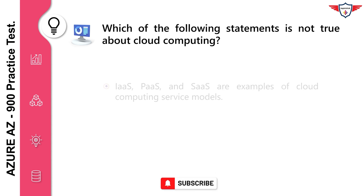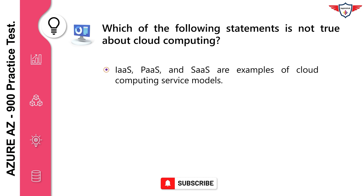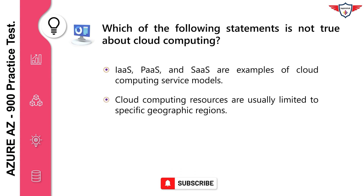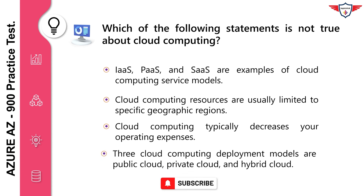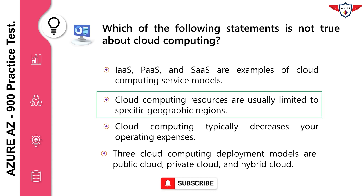Which of the following statements is not true about cloud computing? IaaS, PaaS, and SaaS are examples of cloud computing service models. Cloud computing resources are usually limited to specific geographic regions. Cloud computing typically decreases your operating expenses. Three cloud computing deployment models are public cloud, private cloud, and hybrid cloud. The correct answer is cloud computing resources are usually limited to specific geographic regions. Most cloud computing resources can be distributed to global data centers.